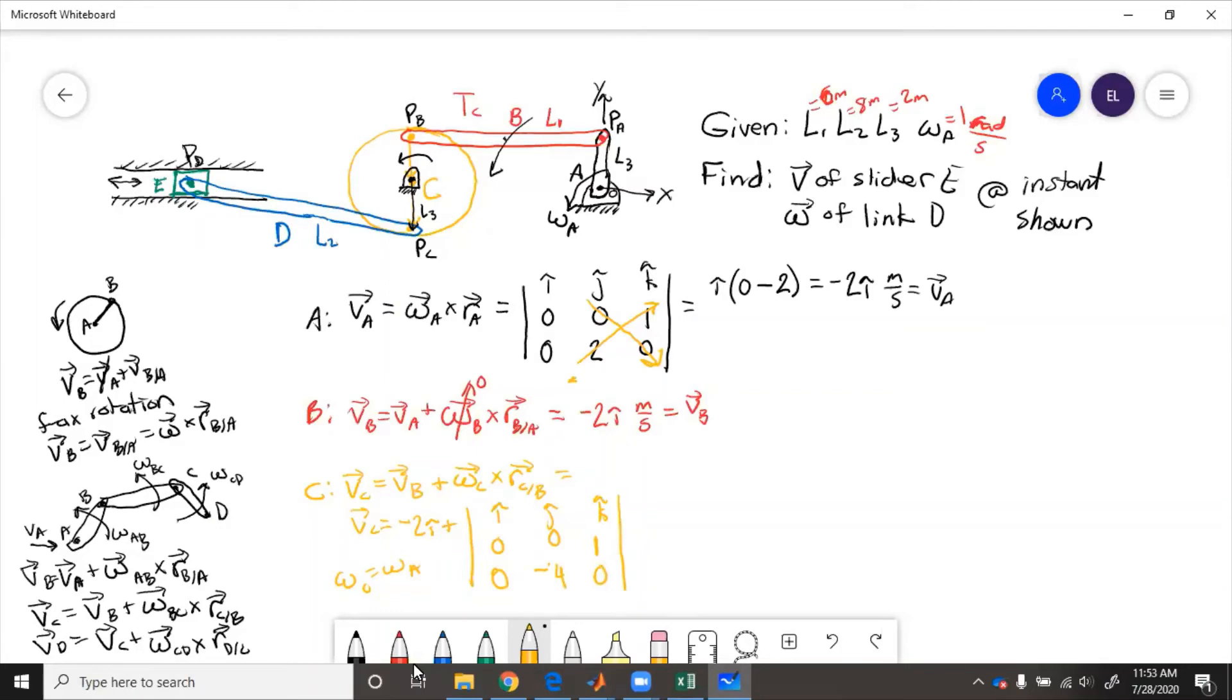So if we do this cross product, so this is going to be i hat times 0 plus 4, j hat is going to be 0, k hat is going to be 0. So then 4 minus 2 equals 2 i hat meters per second equals VC, which we can see by our reality check, same magnitude, opposite direction as B. So now we're almost there.